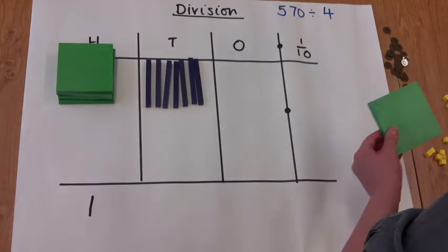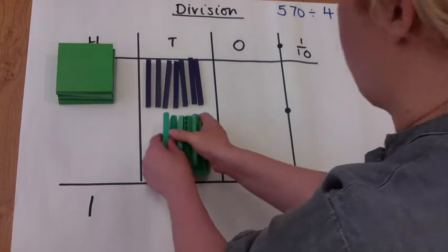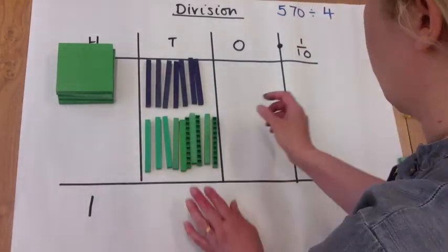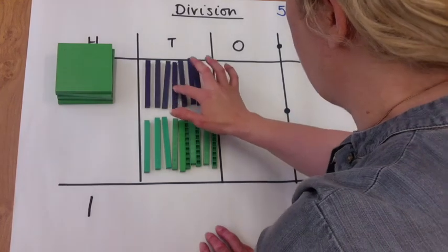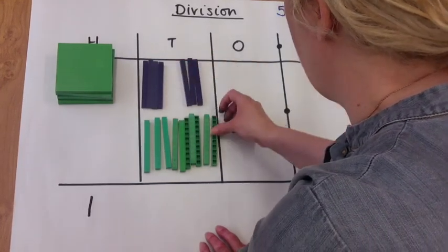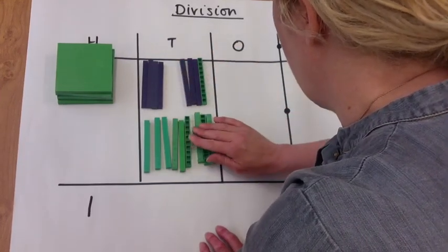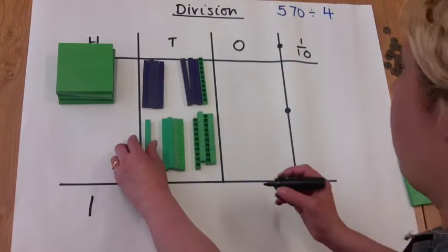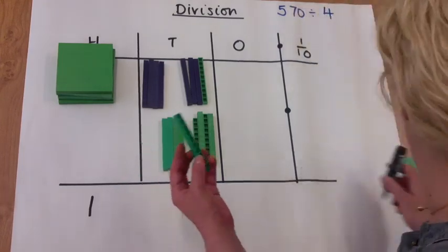So we're going to regroup that into 10 tens. Now how many groups of 4 have we got in there now? One, two, three, four whole groups of 4. But there's one 10 left over.